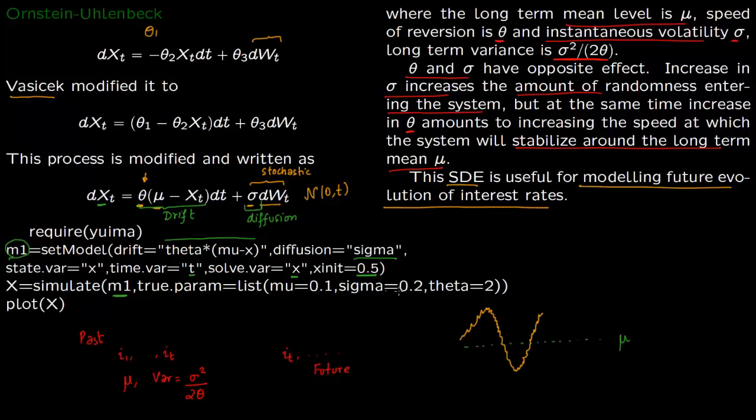So I'm taking mu as 0.1, sigma as 0.2, theta as 2. You can take whatever values you want to. We can just change it. And then we are just going to plot it.